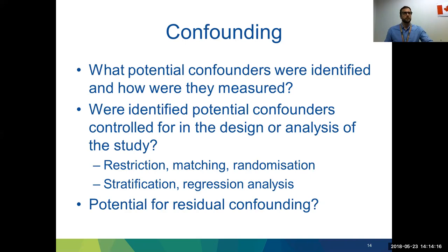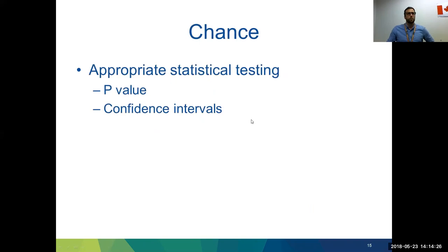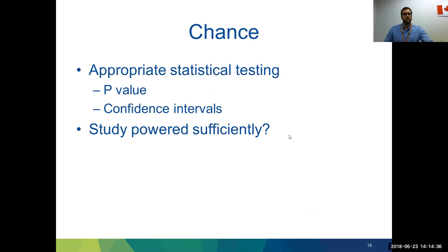For chance: consider whether appropriate statistical testing was used, looking at p-values or confidence intervals. For small studies, particularly with non-significant findings, consider whether the study was adequately powered to detect the outcome of interest.